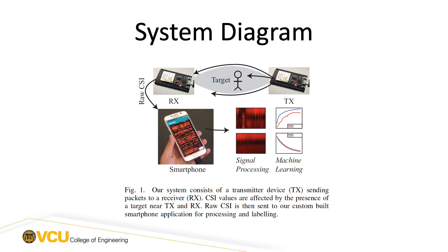I will note that existing systems for extracting channel state information require PCI express buses, which are only available on laptops and computers. Thus, it is not possible with those systems to collect and process CSI directly from a smartphone.